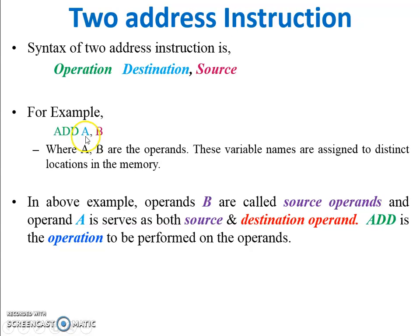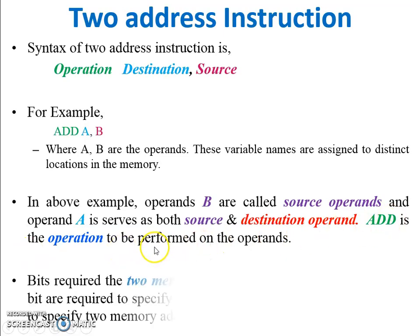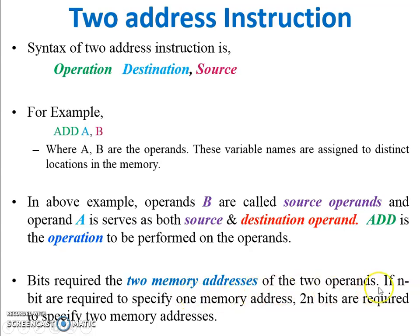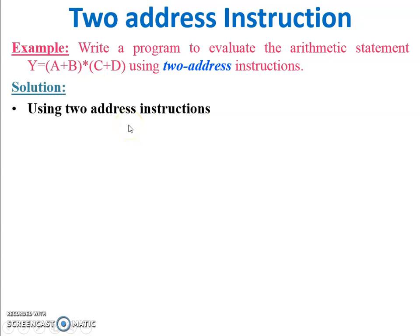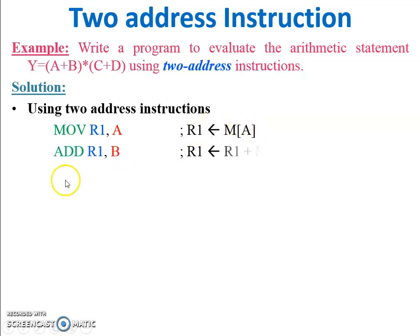Operand A serves as both source and destination operand. When addition is performed, the value of A and value of B are added, and the answer is stored back in A — so the previous value of A is replaced by the result. ADD is the operation to be performed. If n bits are required for one memory address, then two n bits are required to specify two memory addresses.